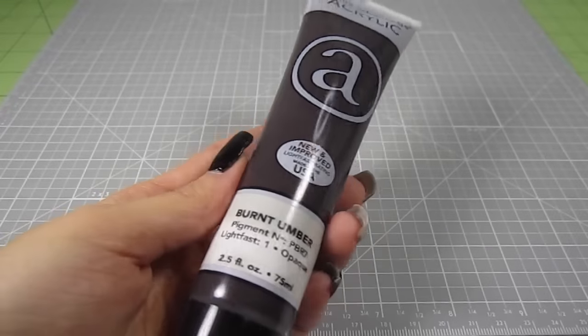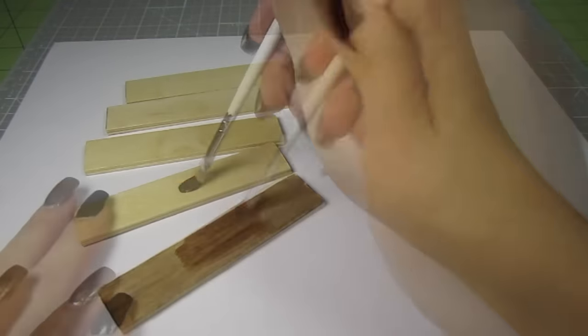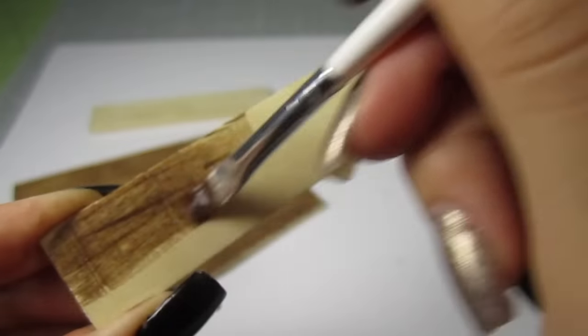To create the stain, I mix some dark brown acrylic paint with some water. Paint that onto all the popsicle stick pieces. Add on more layers if you like a darker look. The most important thing is that the color looks even.